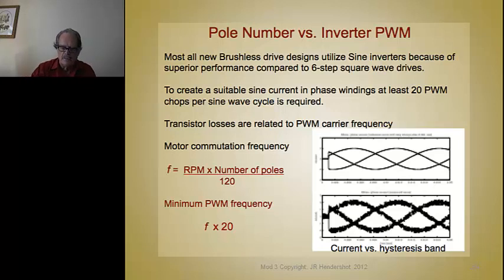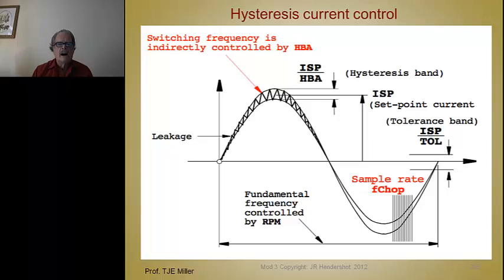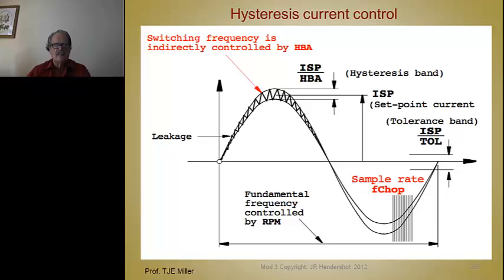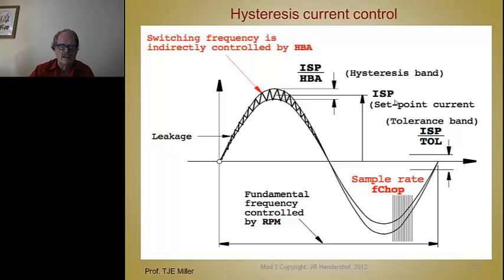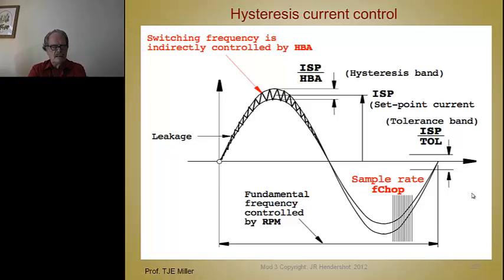Here's another picture of what hysteresis control looks like — a slide from Tim Miller showing it nicely. You do get some overshoot and leakage outside the hysteresis control band, but you set a current, a hysteresis bandwidth, and PWM to stay inside of it. Even D and Q axis control has to stay in a hysteresis band as well.